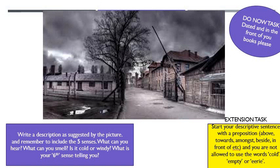I'm sorry the picture quality isn't particularly great, but hopefully you can start to see the outline. You can see the mood and the atmosphere of the picture. Could you write a description as suggested by the picture and remember to include the five senses? What can you hear? What can you smell? Can you feel the wind racing through your hair, for instance? And don't forget to mention your sixth sense — that little gut instinct inside of you, that feeling inside.